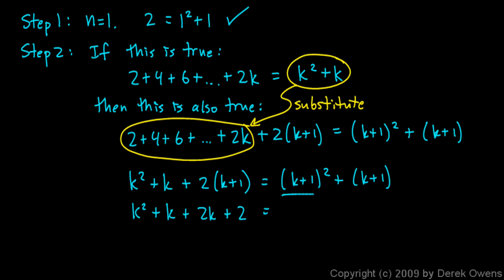On the right side, working out the square of the binomial, I have k squared plus 2k plus 1 plus k plus 1.